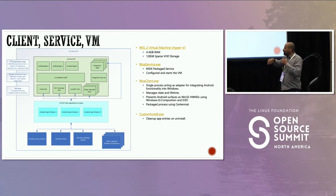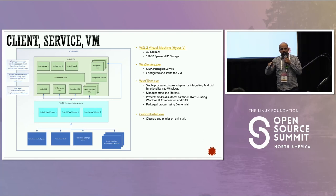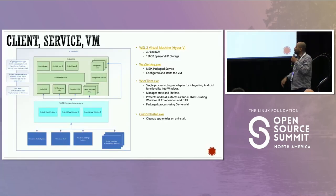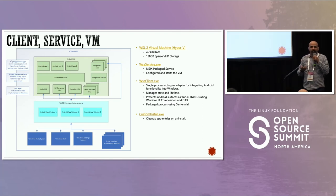In the diagram, we have the Android VM, and the blue box is the Win32 application that is a bundle of all of this. This is the application you can install from the Microsoft Store. We have one instance of it running — if you close it and double-click, it's just one instance. But if you have multiple users, there's an instance launched for each user in Windows.